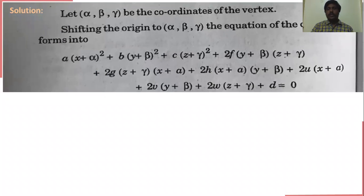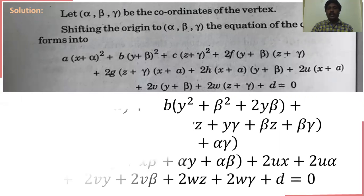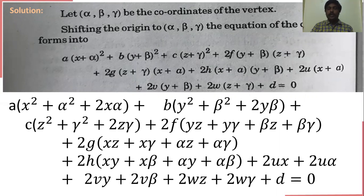We have taken a common vertex (α, β, γ). We are shifting equation 1 to the vertex (α, β, γ). So instead of x, we put x + α; instead of y, we put y + β; and instead of z, we put z + γ.